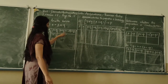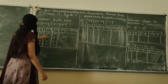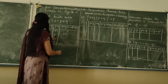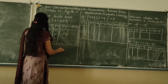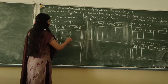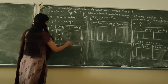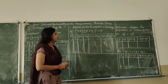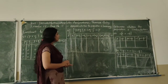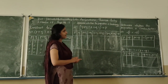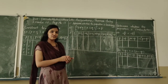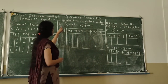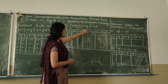Next we determine whether the proposition is a tautology. A tautology is a proposition which takes only true values. The question is: (P or Q) and (negation Q implies P).